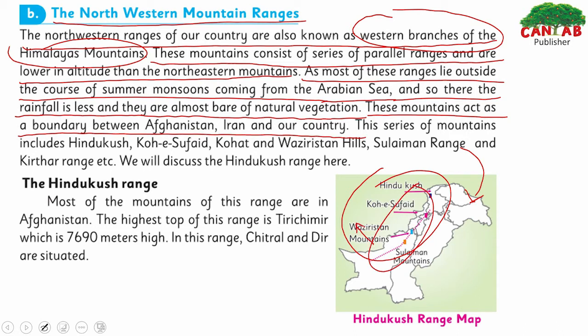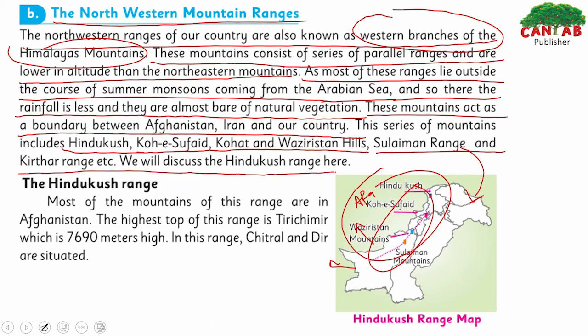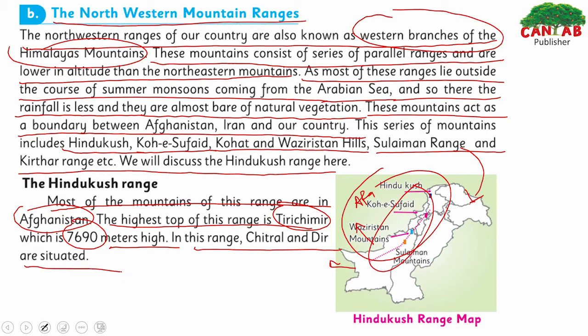These mountains act as a boundary between Afghanistan, Iran, and our country. On one side is Iran and on the other side is Afghanistan. The Hindu Kush includes ranges like Koh-e-Safaid and the hills of Waziristan — the majority of these mountains are in Afghanistan. The highest peak of this range in Pakistan is Tirich Mir at 7,690 meters. Chitral and Dir districts are situated in these Hindu Kush ranges.